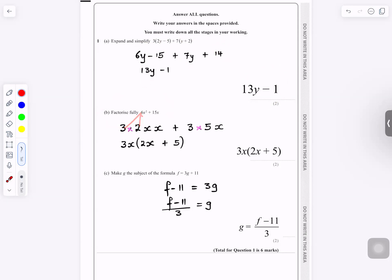For part b, factorize fully. 6 is the same as 3 times 2, 15 is the same as 5 times 3. What is common is 3 and x. So you take 3x out of the bracket, you're left with 2x plus 5. So 3x bracket 2x plus 5.